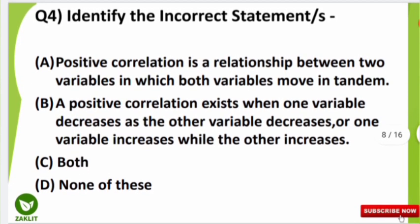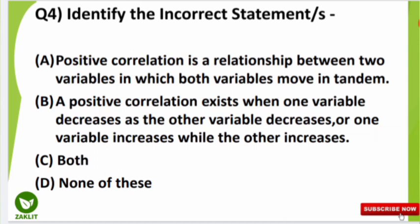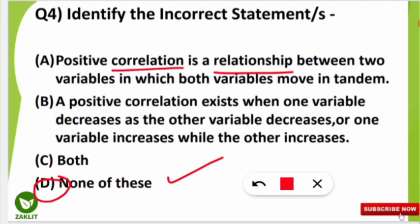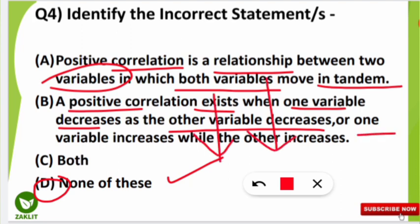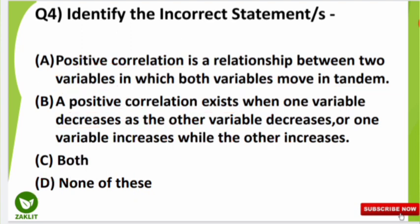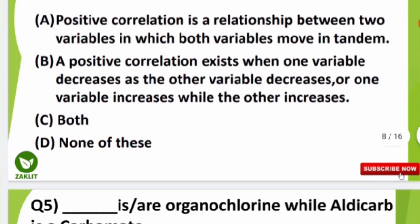The fourth question asked to identify the incorrect statements. Here, none of the statements were incorrect, so option D is correct. The first statement: positive correlation is a relationship between two variables in which both variables move in tandem. The second statement: a positive correlation exists when one variable decreases as the other variable decreases — it is proportional. Also, one variable increases when the other increases. These are the two definitions of positive correlation.